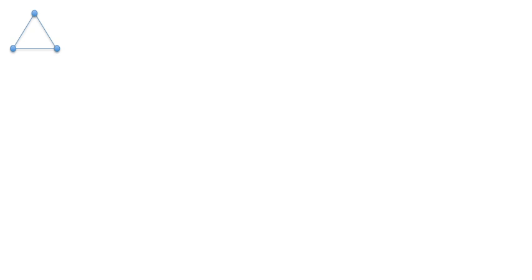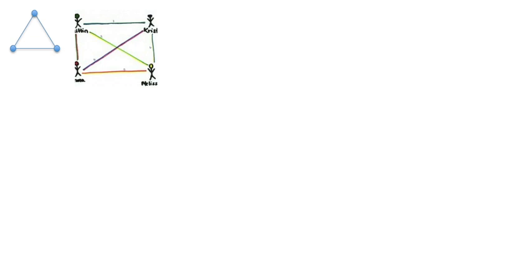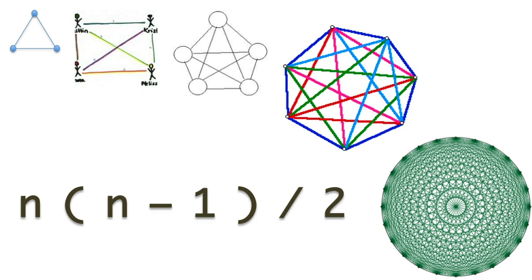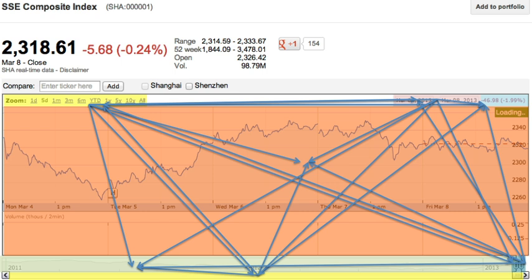This is the handshake problem. In a room of n people, how many handshakes are there if every person has to shake the hand of every other person? The problem is that, as you increase the number of people, the growth is quadratic. Every person you add doesn't just add one new handshake — it adds a handshake with that person and every other person in the room. And where quadratic might not be bad for computation, it's terrible for human efficiency.